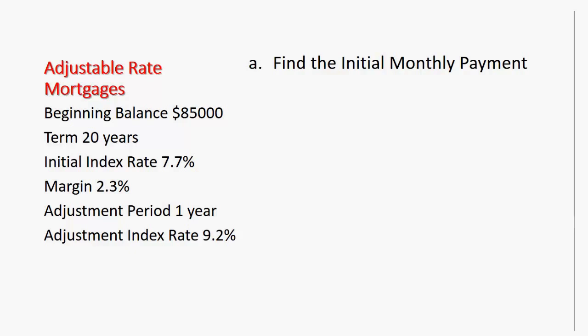The basic idea of an adjustable-rate mortgage is that the interest rate changes periodically. In this case, the beginning balance is $85,000, the term of the loan is 20 years, the initial index rate is 7.7%, the margin is 2.3%, the adjustment period is 1 year.